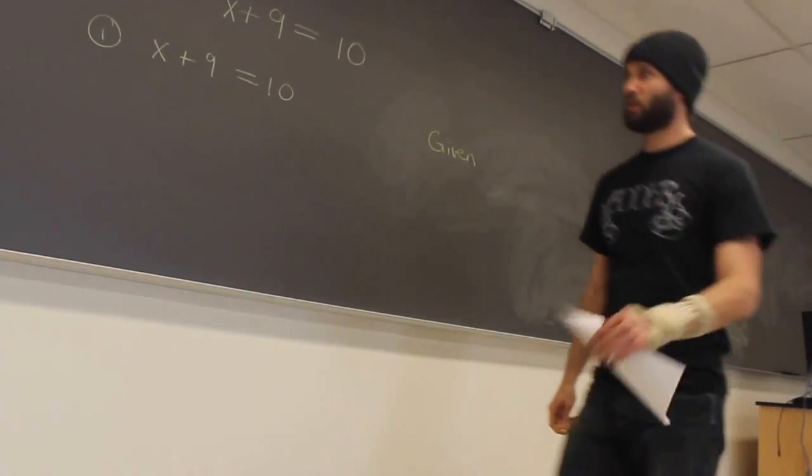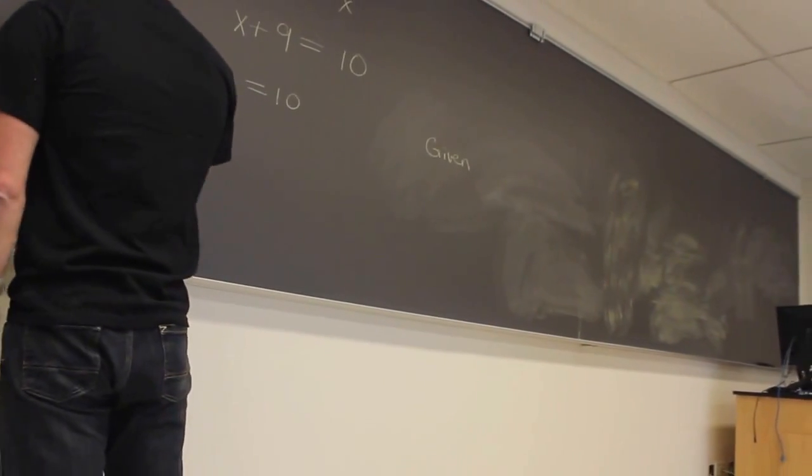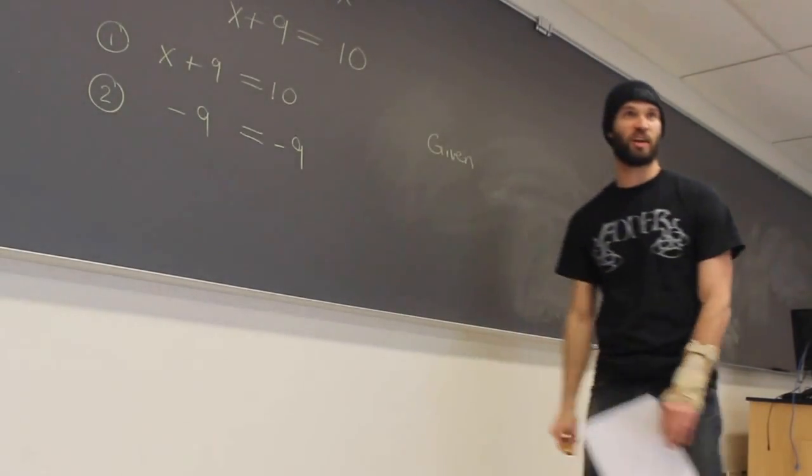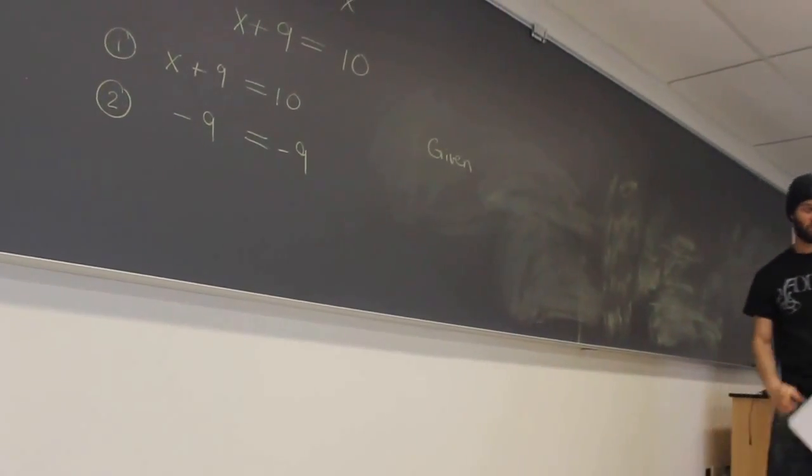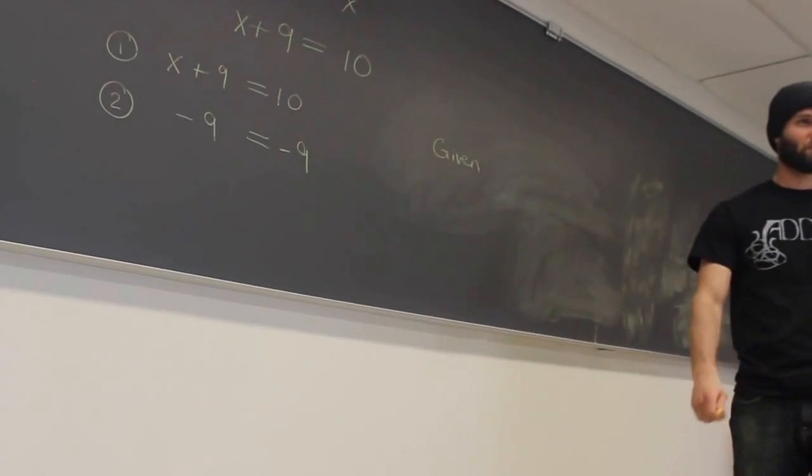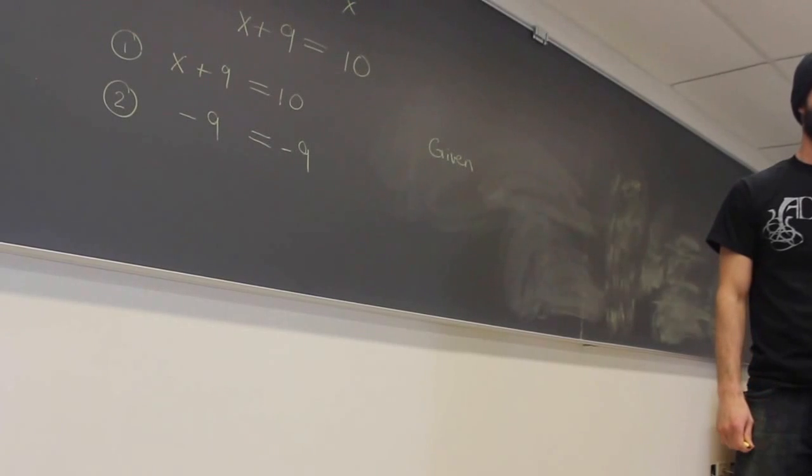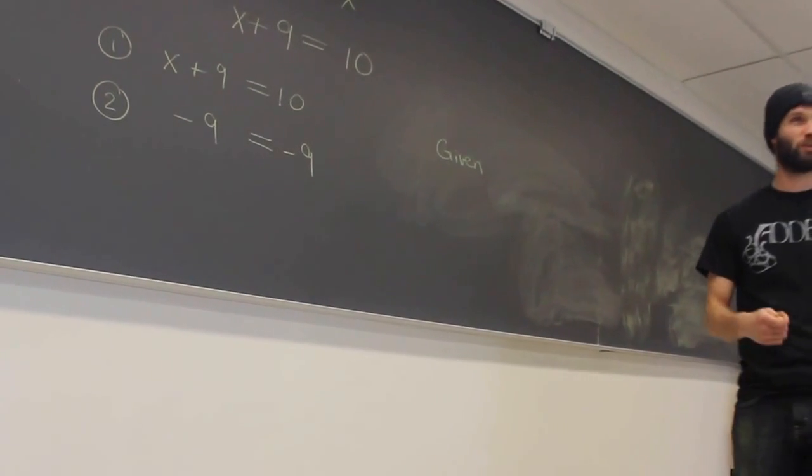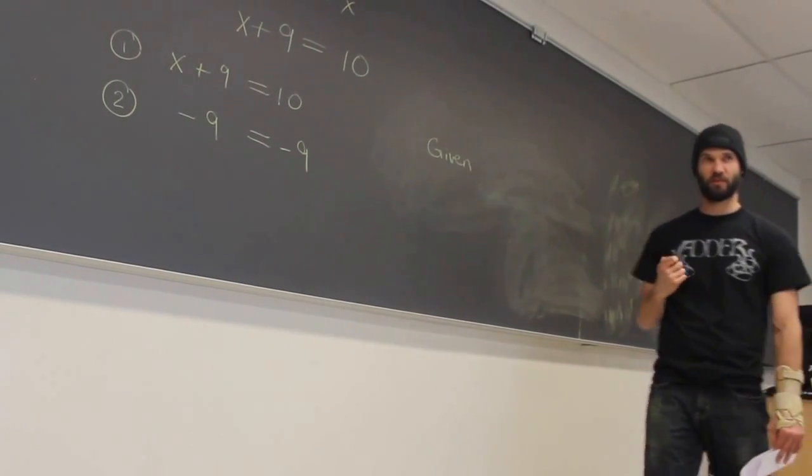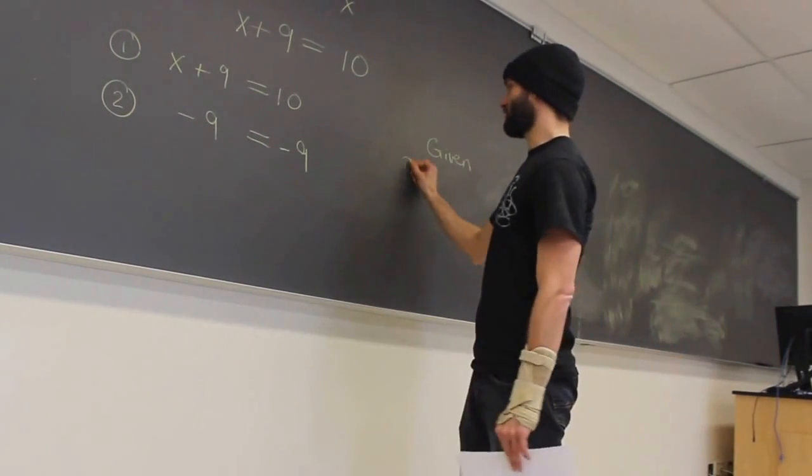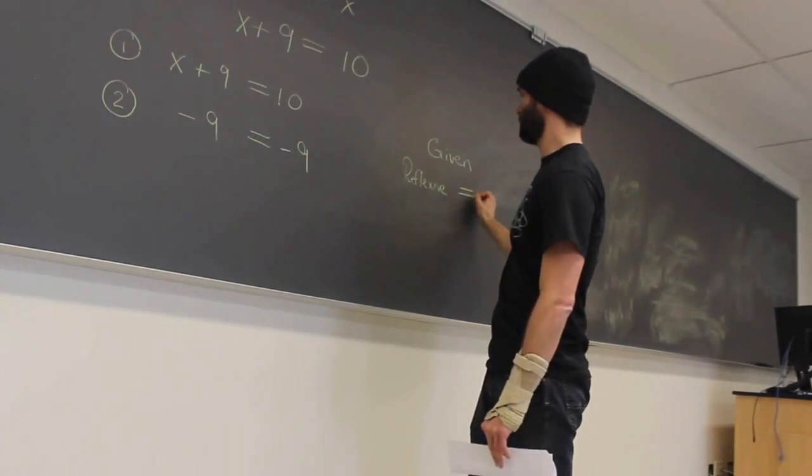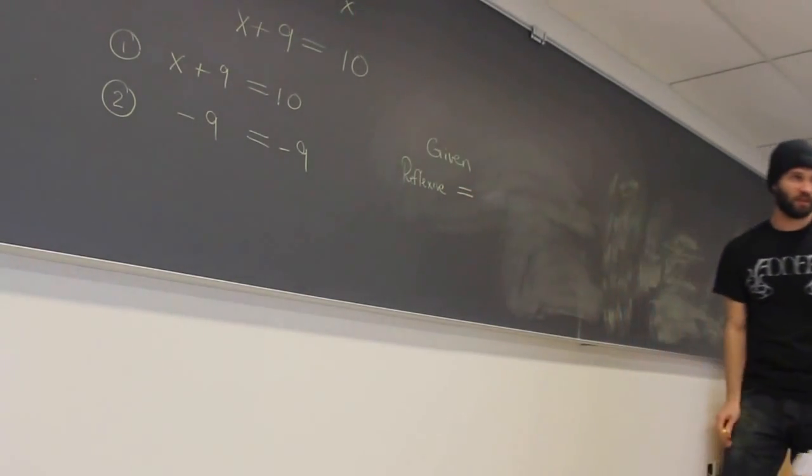The next thing I'm going to do, which you would never think to do, is write minus 9 equals minus 9. Is this a true statement? And if a student asks you why, what's your answer? Because it's obvious, right? Does anyone remember what this property is? From number theory or abstract algebra? It's called the reflexive property. Everything is equal to itself. Equality is reflexive.